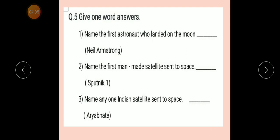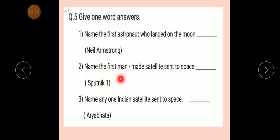Now question number five: Give one word answer. Number one: Name the first astronaut who landed on the moon. Answer: Neil Armstrong. Number two: Name the first man-made satellite sent to space.